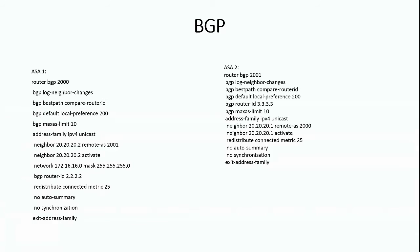As we remember in the topology diagram shared before, it was ASA1, ASA2, ASA3, and router R1 from where routes are being redistributed. On ASA1, the autonomous system number is defined as 2000, and on the other ASA, the autonomous system number is defined as 2001.